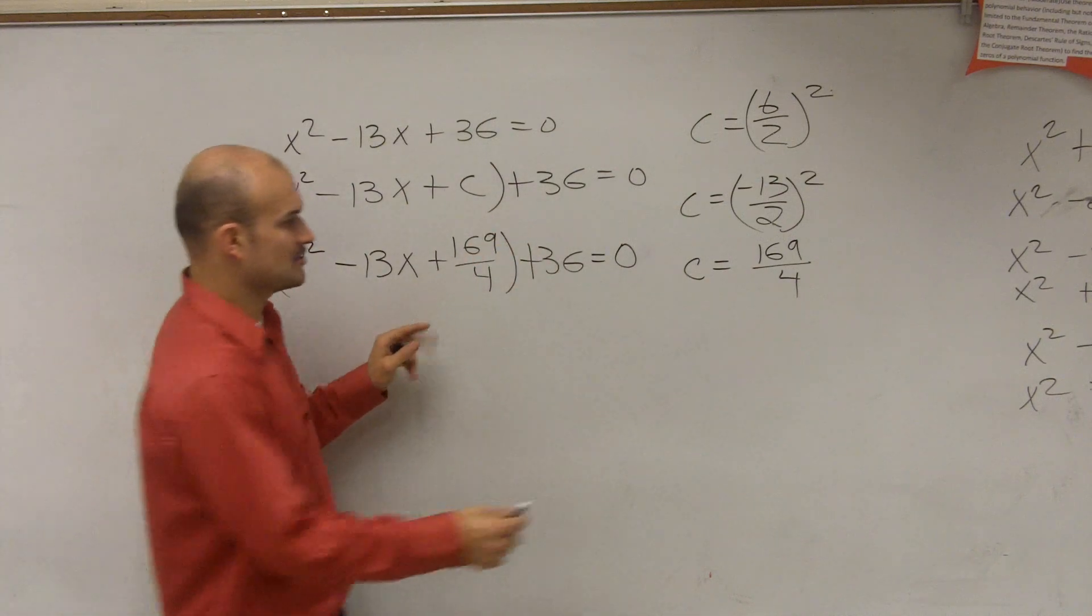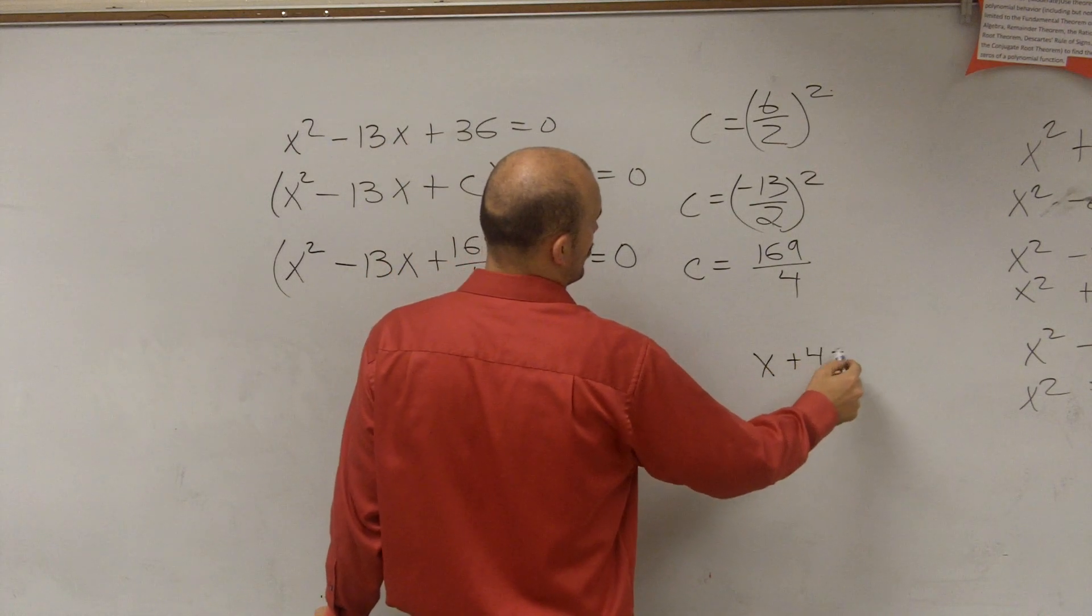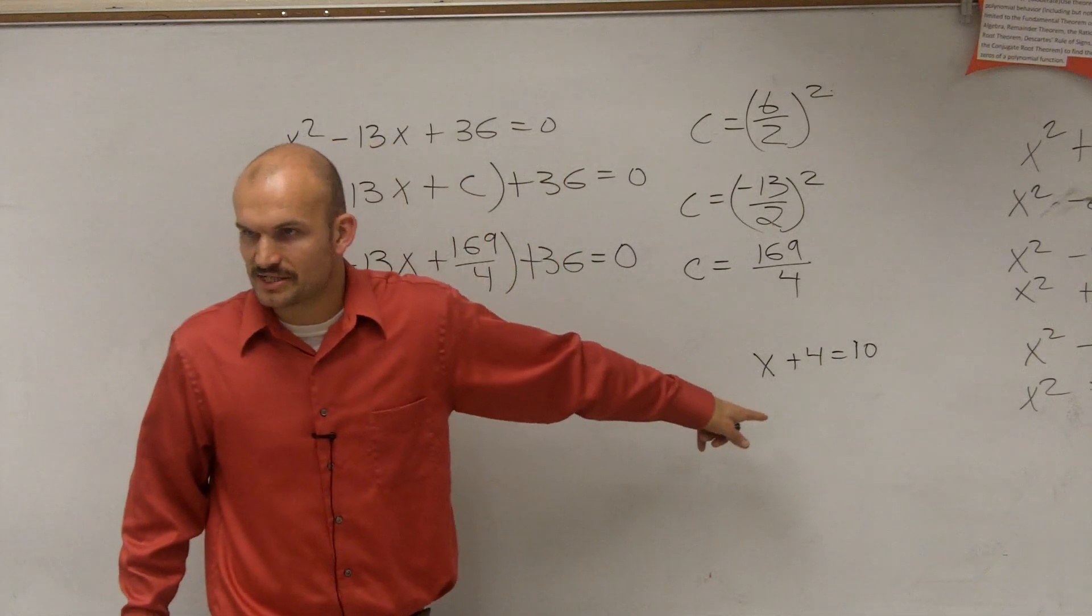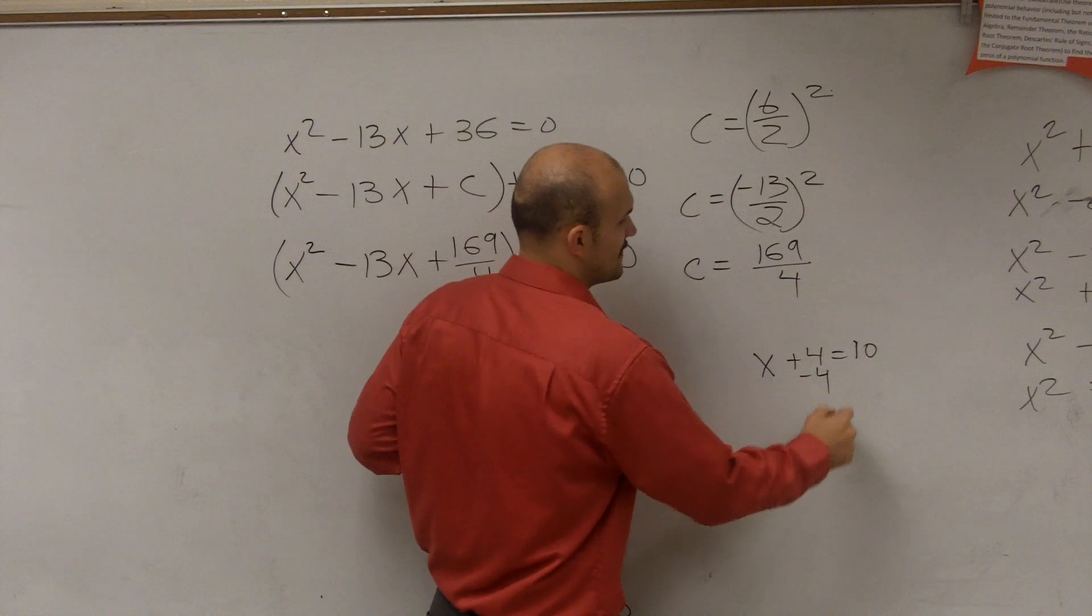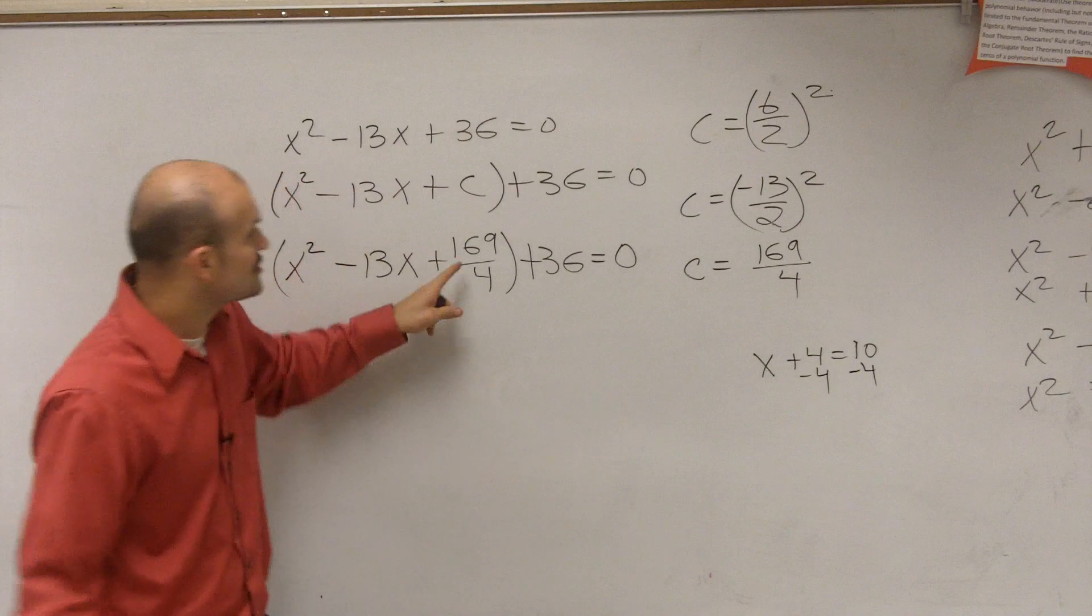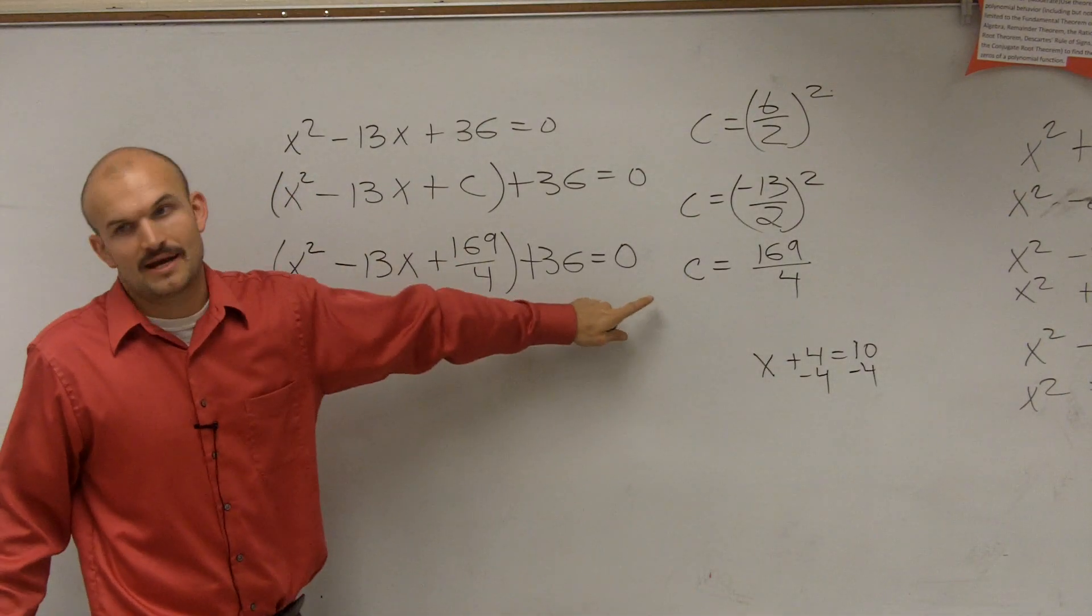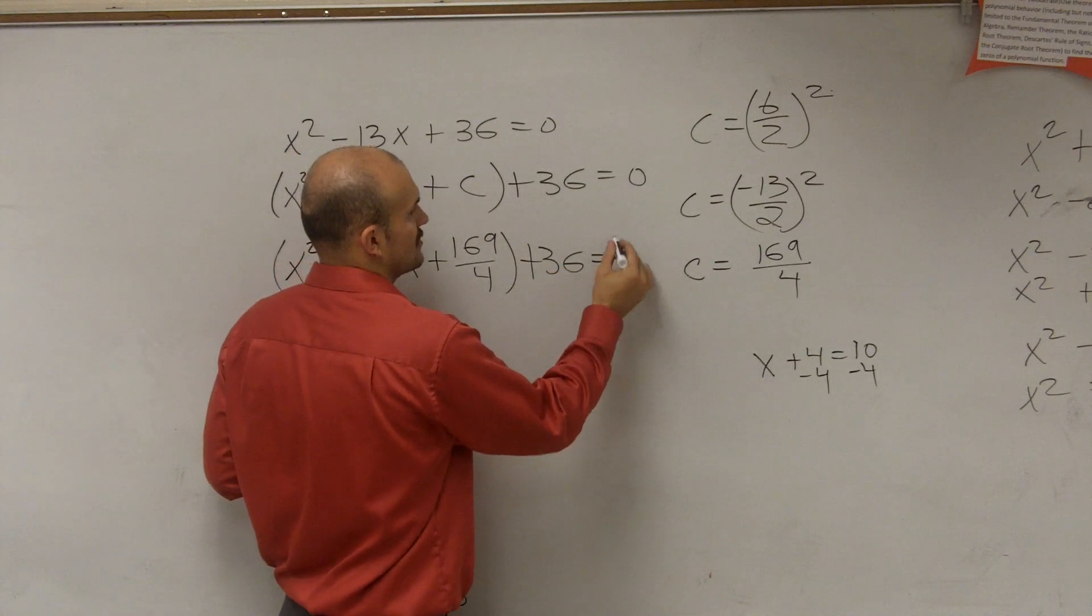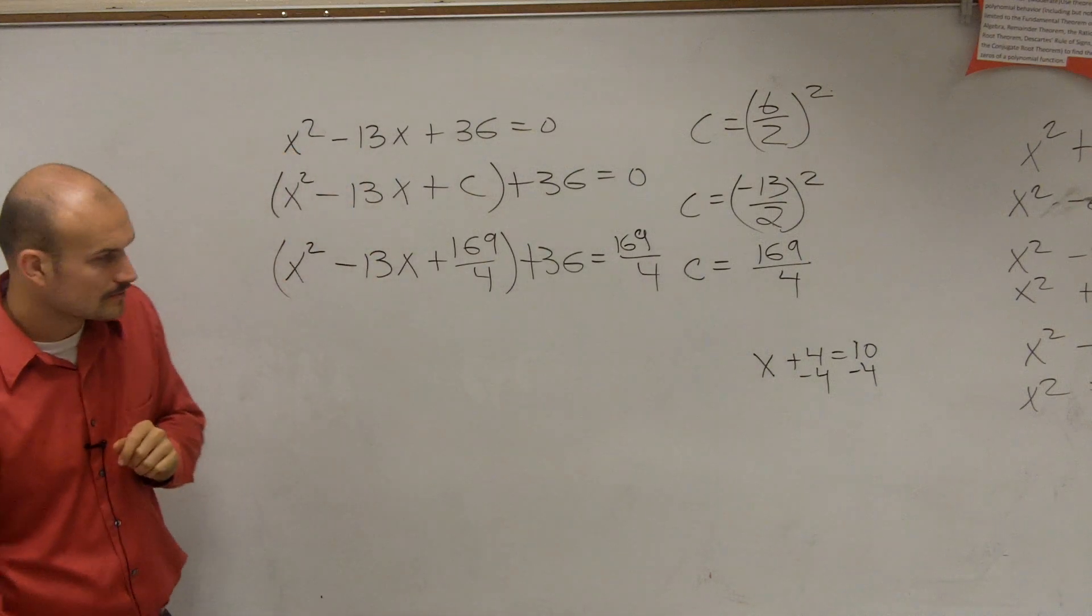If I add, if you guys go back to your equations, when you guys did something like this, x plus 4 equals 10, to solve for this, we subtracted 4 on both sides. If you subtract 4 on the left side, what do you have to do on the right side? Subtract 4, right? You guys are drilled into that. So if I add 169 over 4 on the left side, what do you think I have to add on the right side? 169 over 4. So it's actually going to be 0 plus 169 over 4.